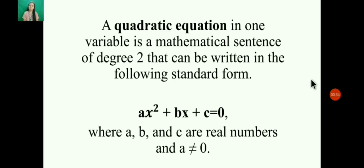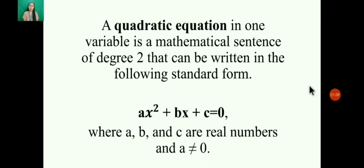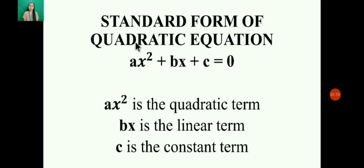Let's start with the definition of a quadratic equation. A quadratic equation in one variable is a mathematical sentence of degree 2 that can be written in the standard form: ax² + bx + c = 0, where a, b, and c are real numbers and a is not equal to 0. Here, ax² is the quadratic term, bx is the linear term, and c is the constant term.